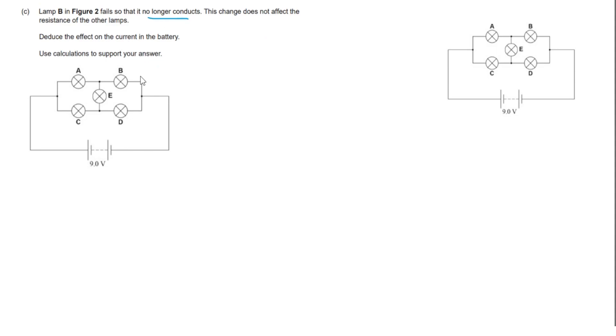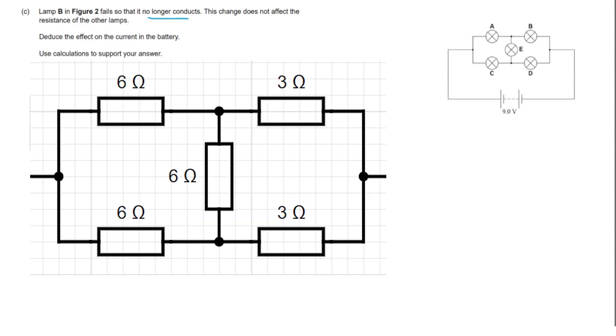In this last part then we have a situation where bulb B actually breaks. Redrawing this with a resistor network, this is the equivalent of removing the three ohm completely. We now find we have a simple resistor network with four resistors. If we can simplify this down to one single resistor, then we can easily calculate the total current coming out of the nine volt battery.